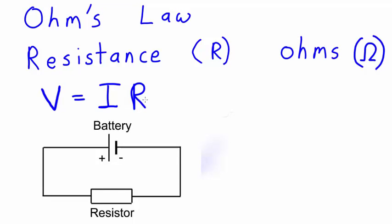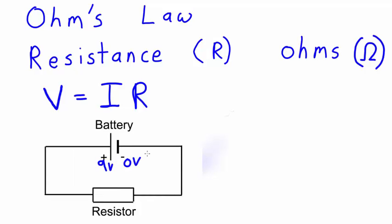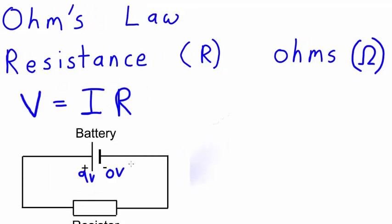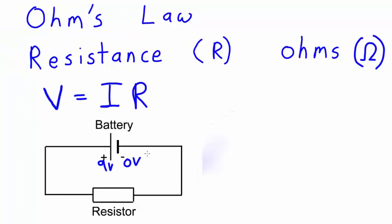Batteries and other power sources usually output a particular voltage. For example, we could have a 9-volt battery. Resistors are components which have a particular resistance that does not change. Let's suppose that this resistor has a resistance of 100 ohms.